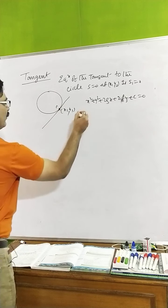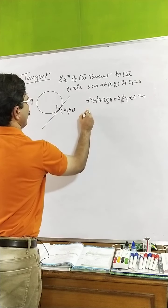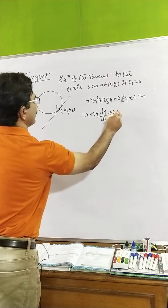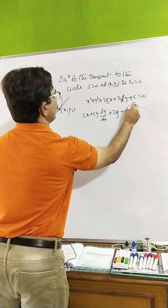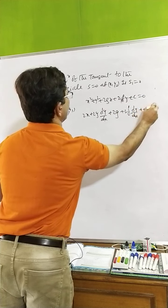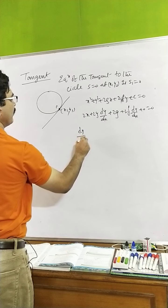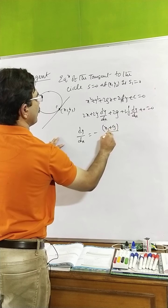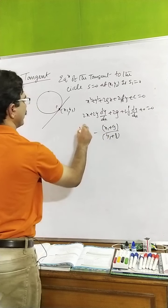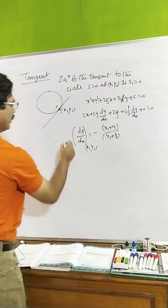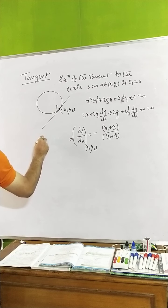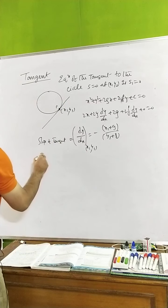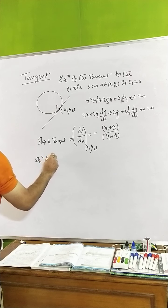Differentiating with respect to x: 2x + 2y(dy/dx) + 2g + 2f(dy/dx) = 0. Finally, dy/dx at (x1, y1) equals -(x1 + g)/(y1 + f). This is the slope of the tangent.